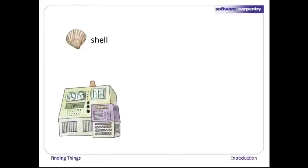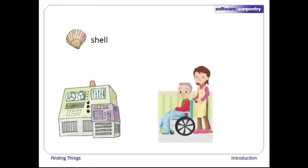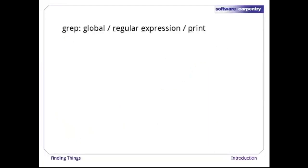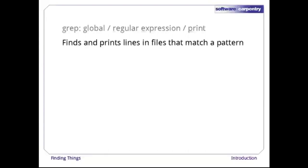We're looking at how to interact with a computer using a command line shell. Just as young people use Google as a verb, crusty old Unix programmers use the word grep. Grep is a contraction of 'global regular expression print', which was a common sequence of operations in early Unix text editors. What the grep program does is find and print lines in files that match a pattern.